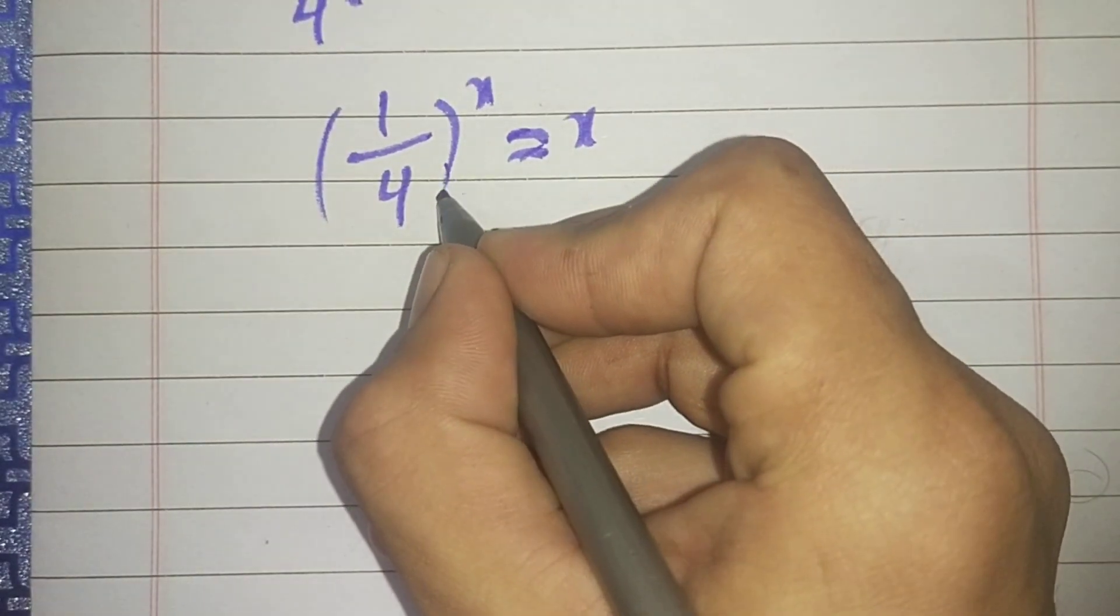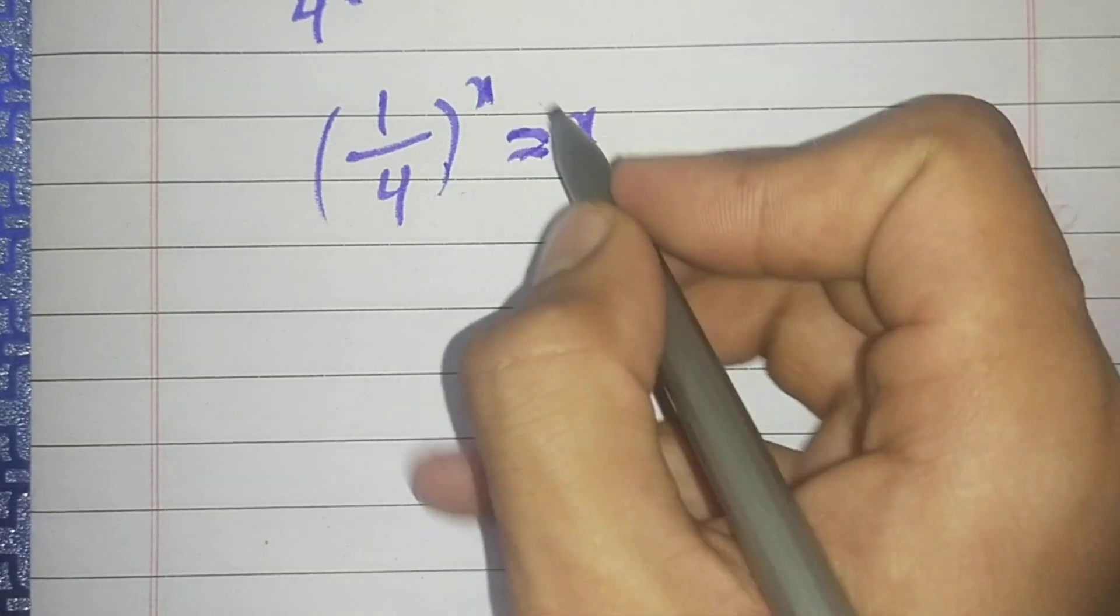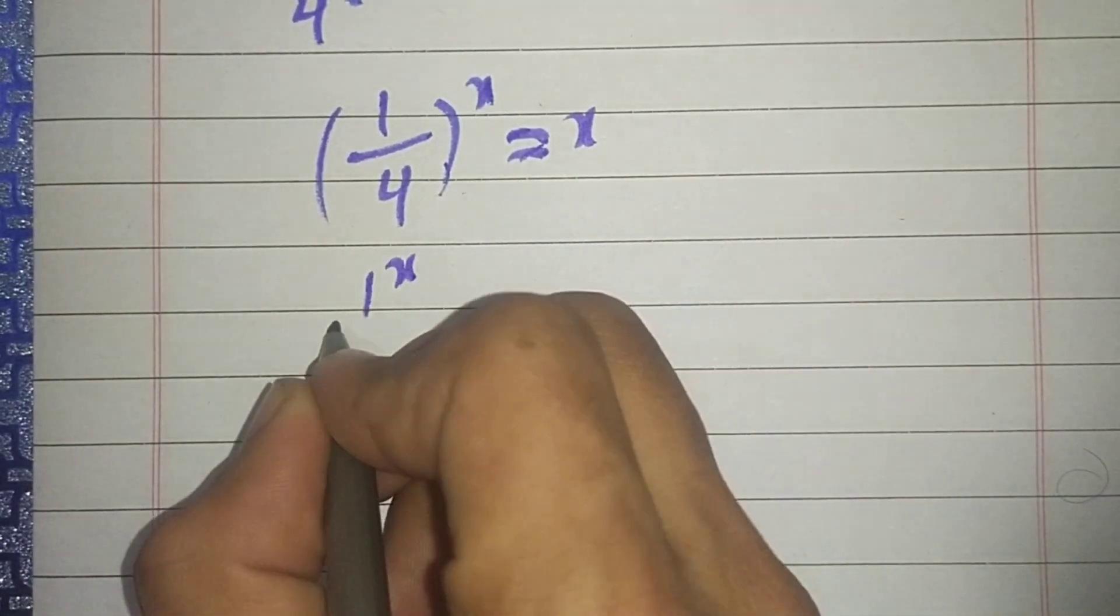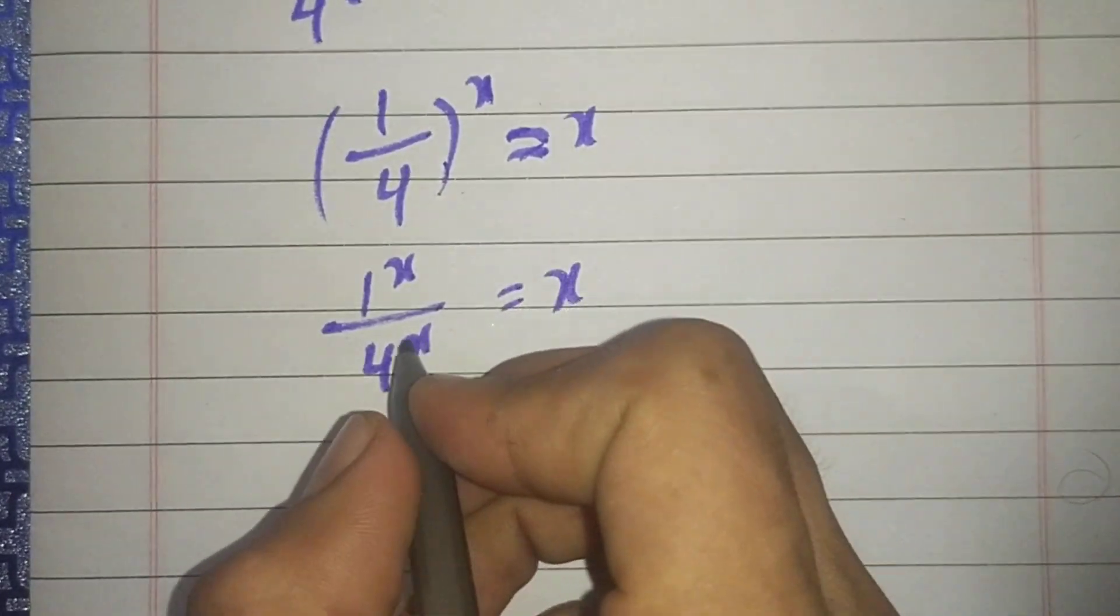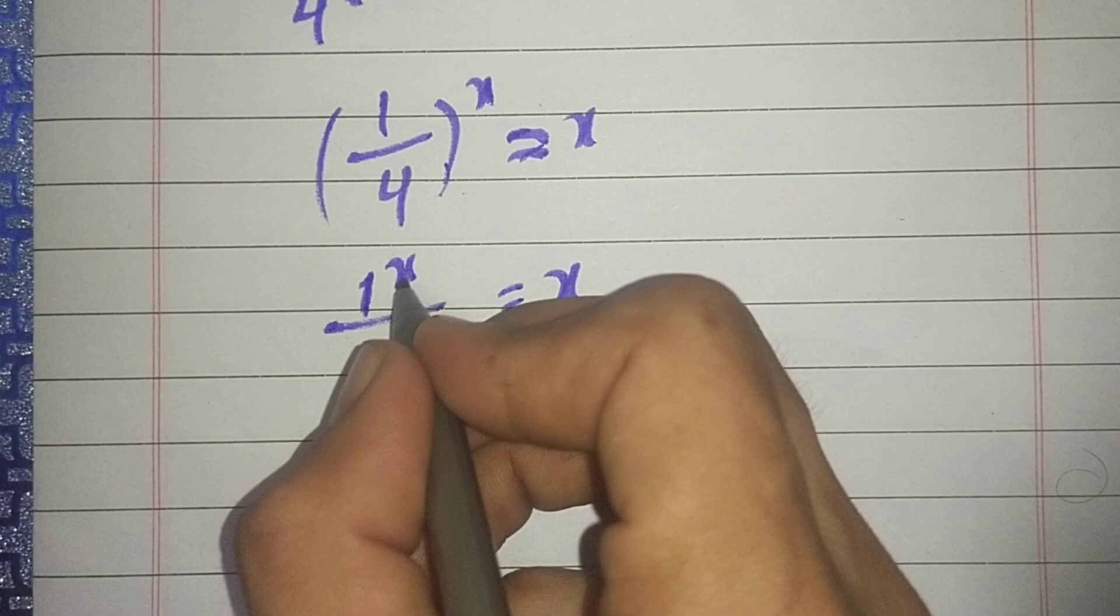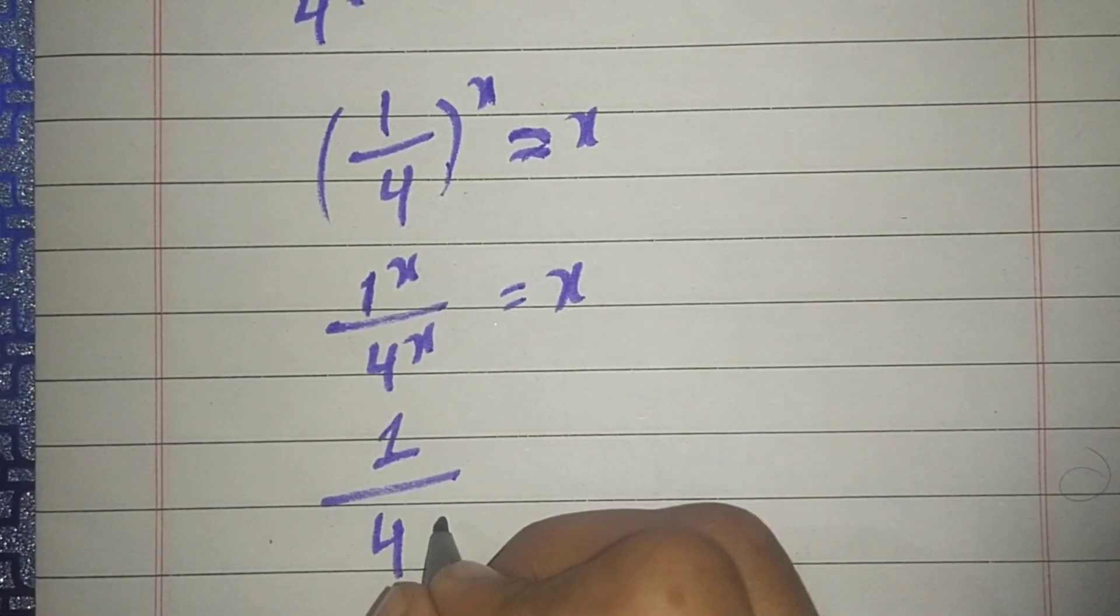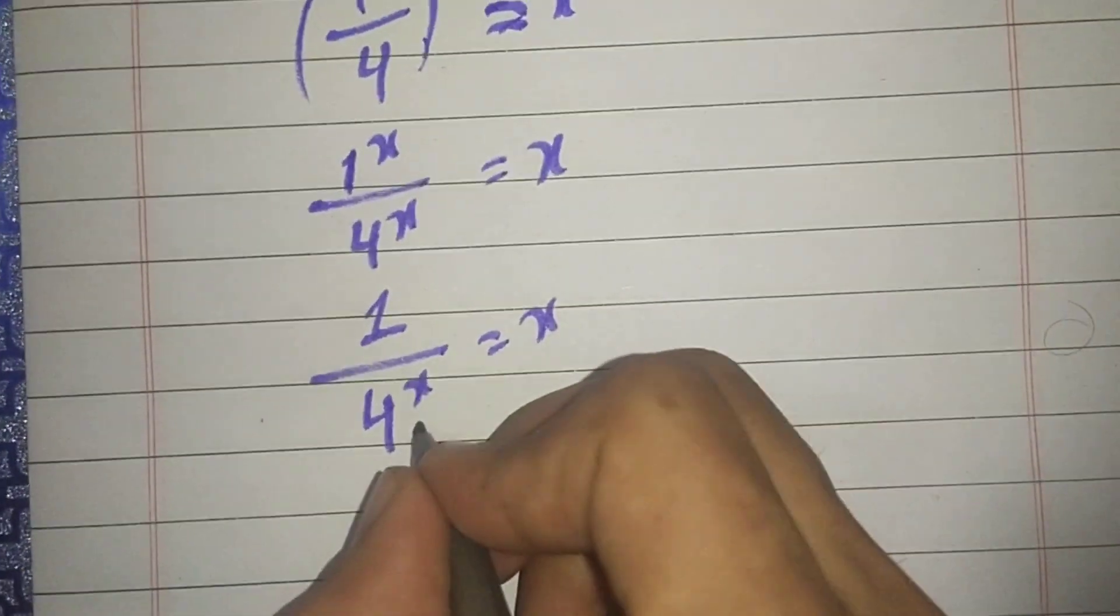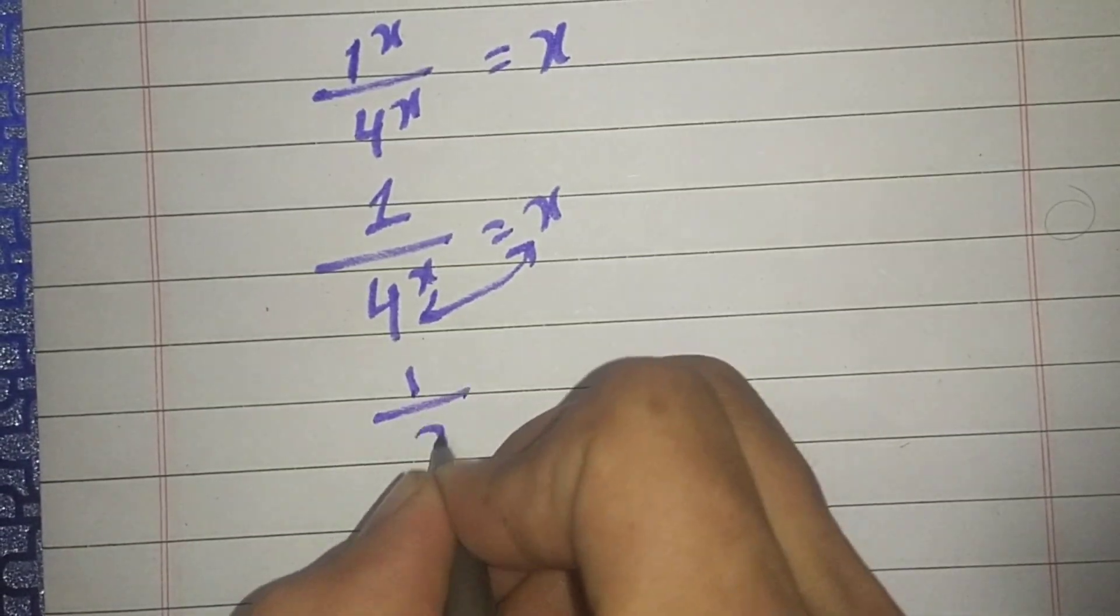We are going to solve this interesting math equation. We have (1/4)^x = x. We can write this as 1^x divided by 4^x equals x. One raised to any power is 1, so we get 1 divided by 4^x equals x.